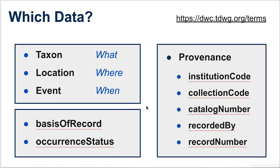We also have Darwin Core fields, or terms, that are going to be of interest in our search for usable data. These include the basis of record, which tells us whether it's an observation or a museum specimen. There's occurrence status, which tells us whether it's a presence or absence record. And there's a set of fields to tell us where to find more information: what institution it's housed in, what collection, and the catalog number, as well as recorder name and record number.